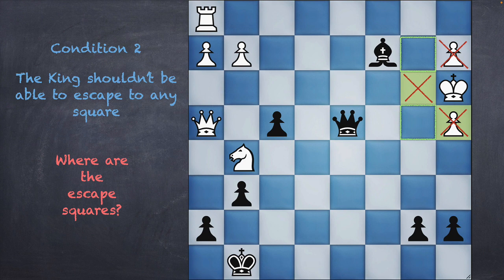You could ask: hey, both of those squares are also controlled by the queen. But remember, the queen in order to give a check is going to have to move away from its current square, which means one or both of these squares would eventually become the escape squares. So it's very important to focus on this particular aspect.